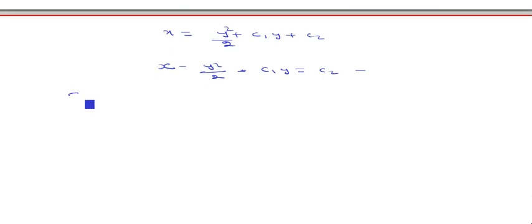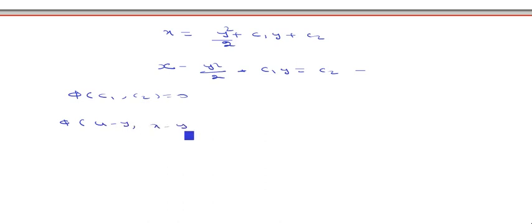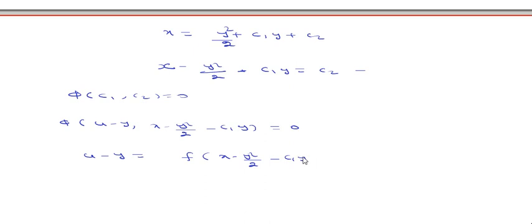The general solution can be written as φ(c1, c2) = 0, where c1 = u − y and c2 = x − y²/2 − c1·y. This gives u − y = f(x − y²/2 − c1·y), and finally u = y + f(x − y²/2 − (u − y)·y).